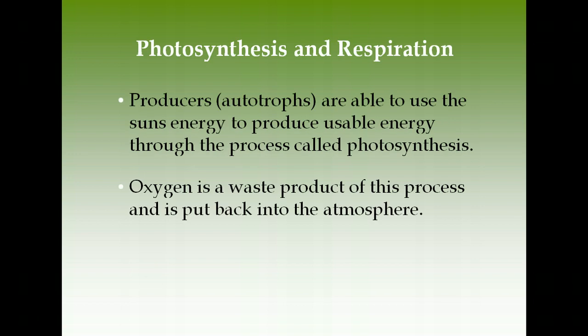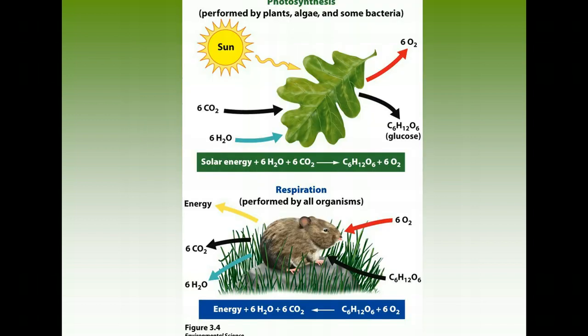Energy flows all start with the sun. Producers, also called autotrophs, take the sun's energy and produce usable energy (sugar/glucose) through photosynthesis. In photosynthesis, oxygen is a waste product — that's where we get our oxygen from trees and plants. Respiration is the reverse process: sugar and oxygen are converted back to water and carbon dioxide. You need to know the balanced equations for both.